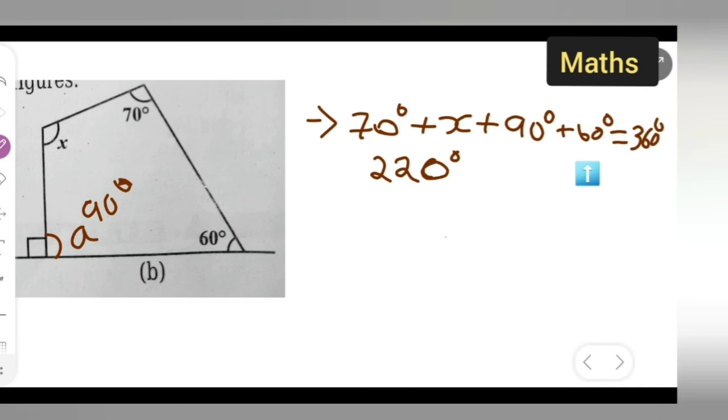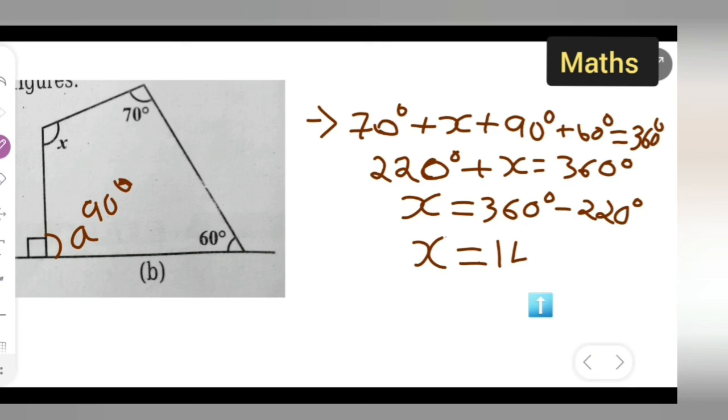220 degrees plus x is equal to 360 degrees. So I can write down x is equal to 360 degrees minus 220 degrees. If you subtract this, we are going to get the value of x to be 140 degrees.